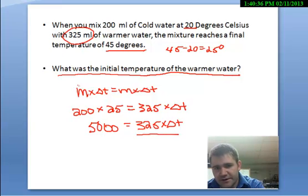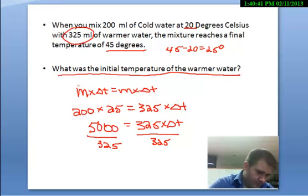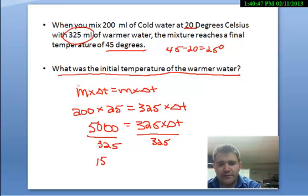And 5000 then has to equal 325 times change in temperature. I divide both sides by 325. And I get 15.38. 15.38 is equal to the change in temperature of the hot water, or the warm water.